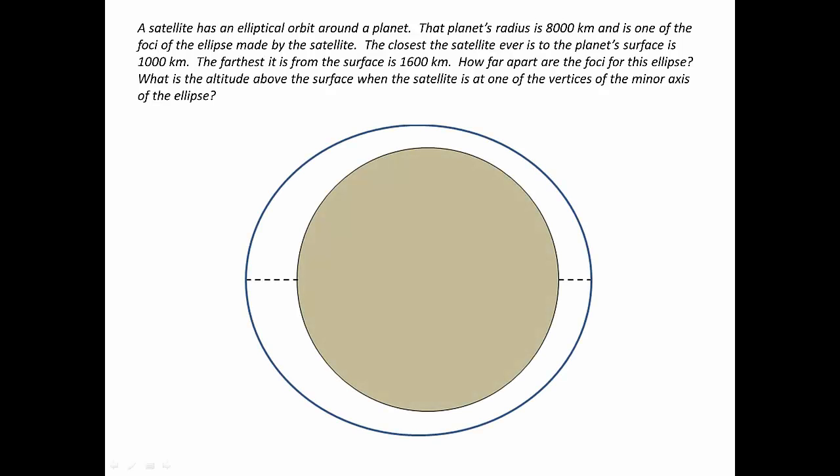If you look at all the numbers, the planet's quite large, and we're told that the satellite is 1,000 kilometers above at the closest point and 1,600 kilometers above the planet at the farthest point. So we have a planet that's actually almost filling up the ellipse, which is a little strange, but it's important to have this picture in mind because when we put our axes in,